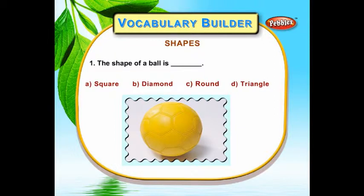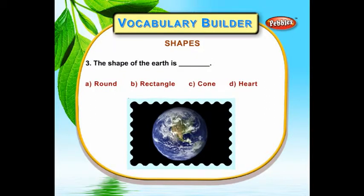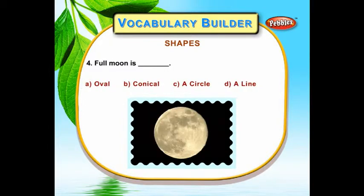The shape of a ball is round. A star can be made with five points. The shape of the earth is round. A full moon is a circle.